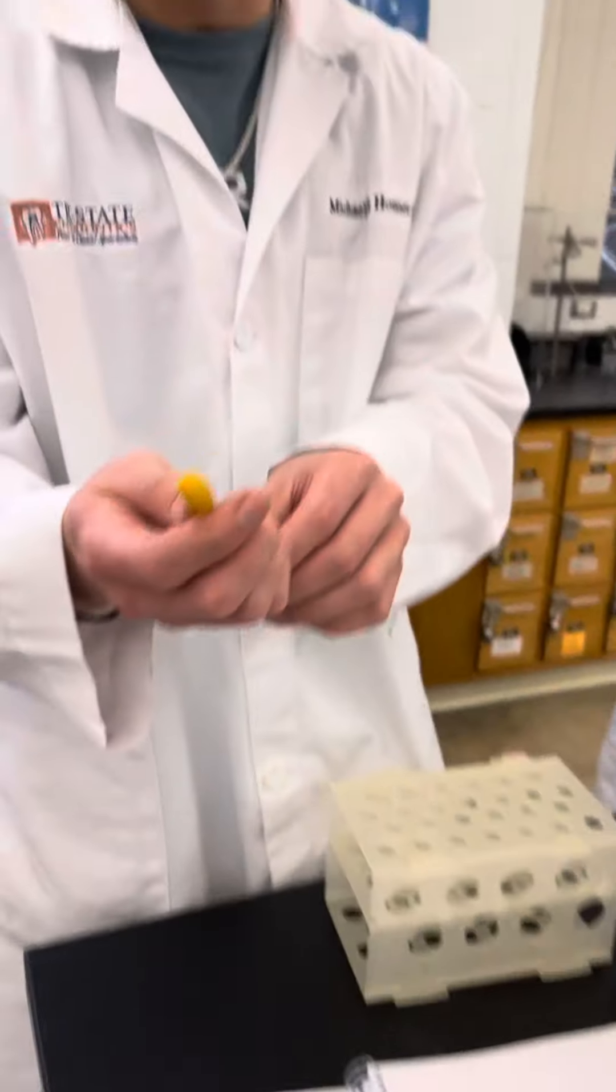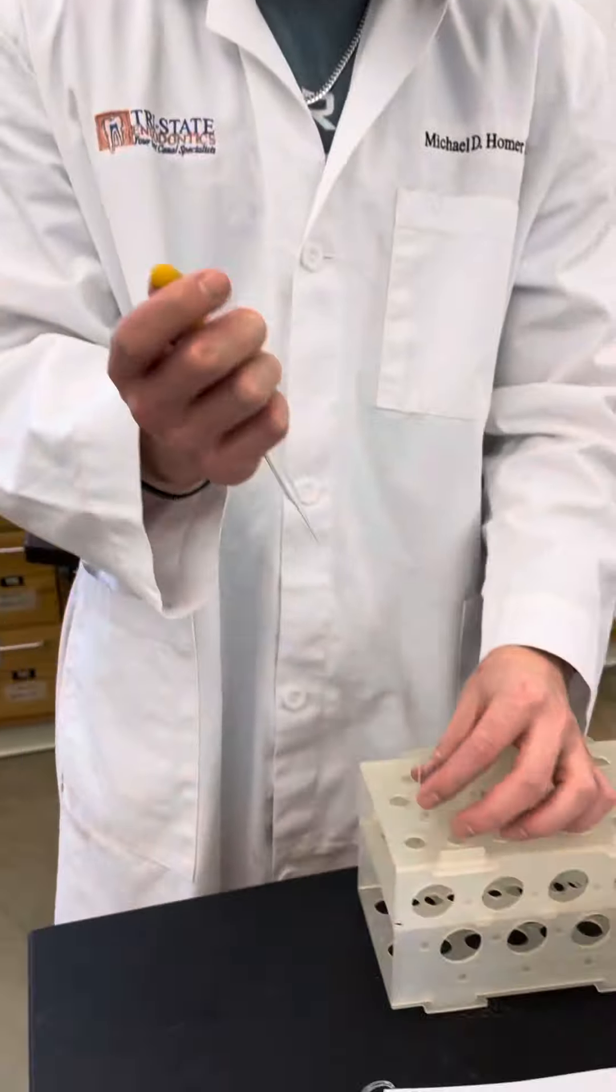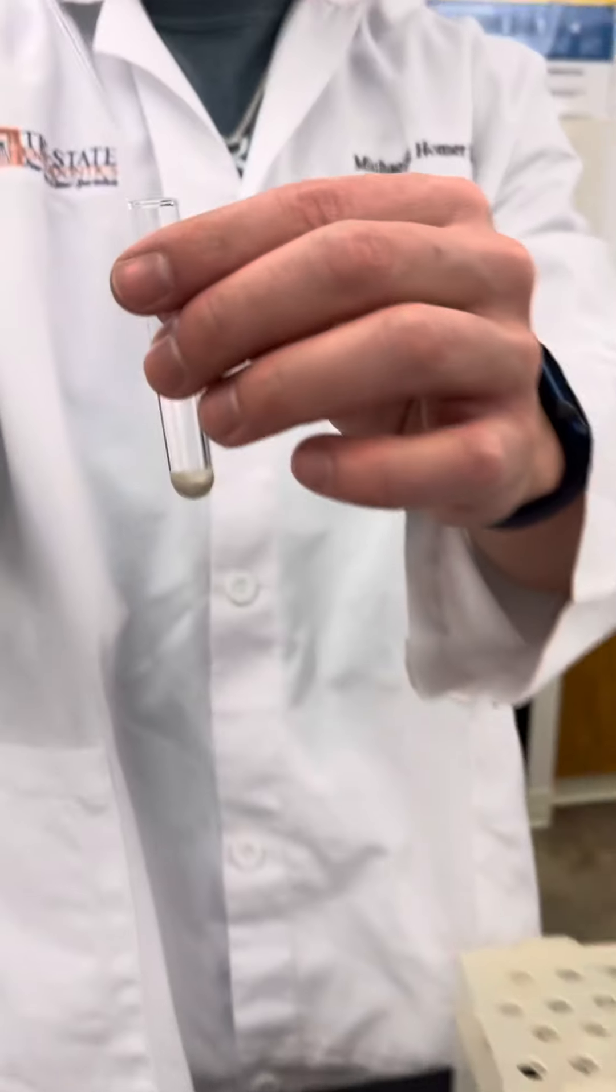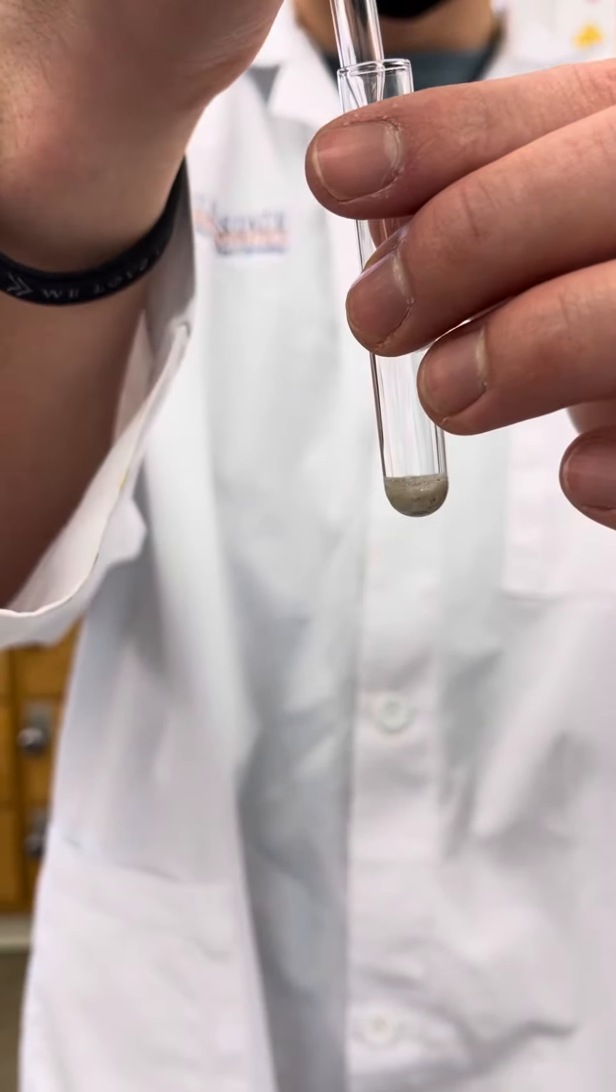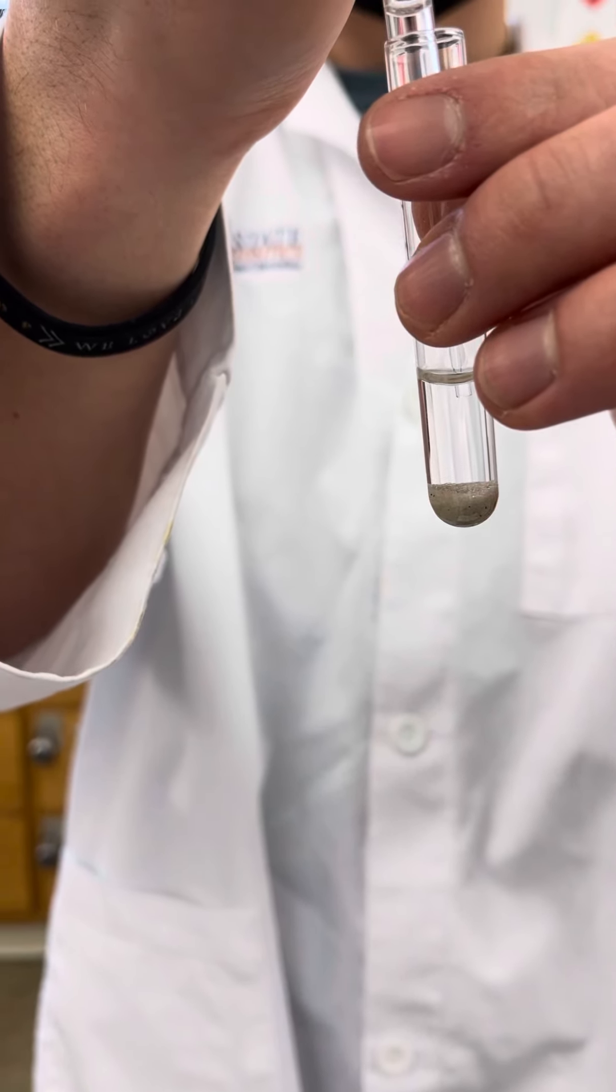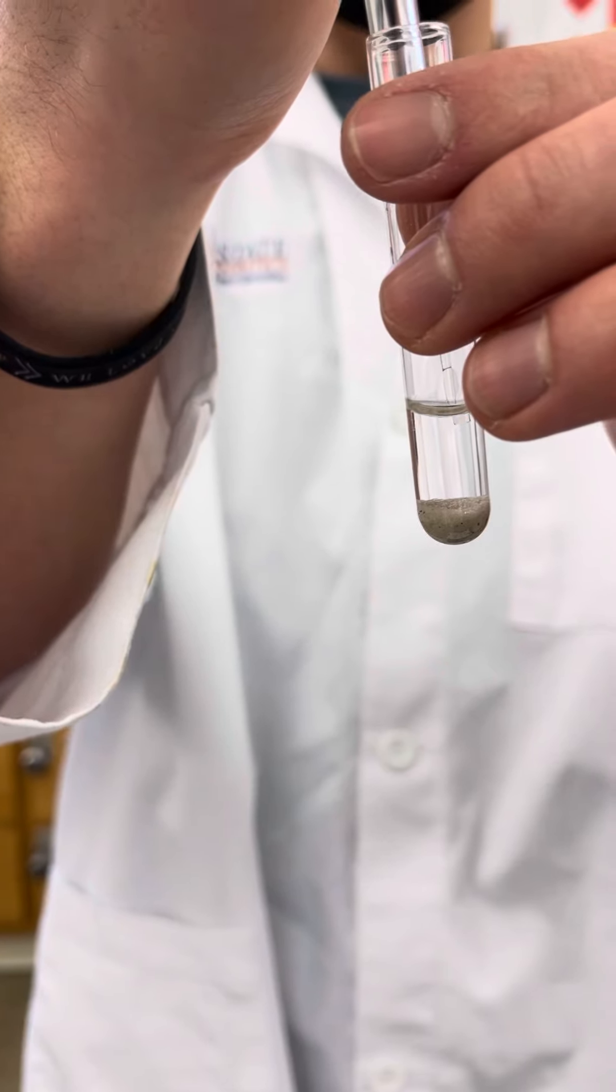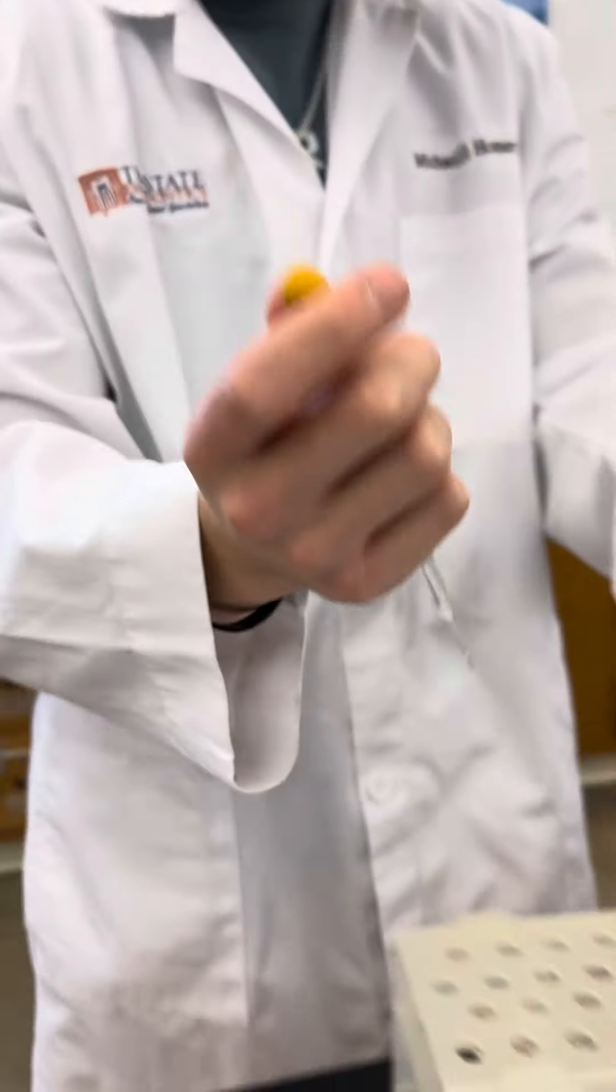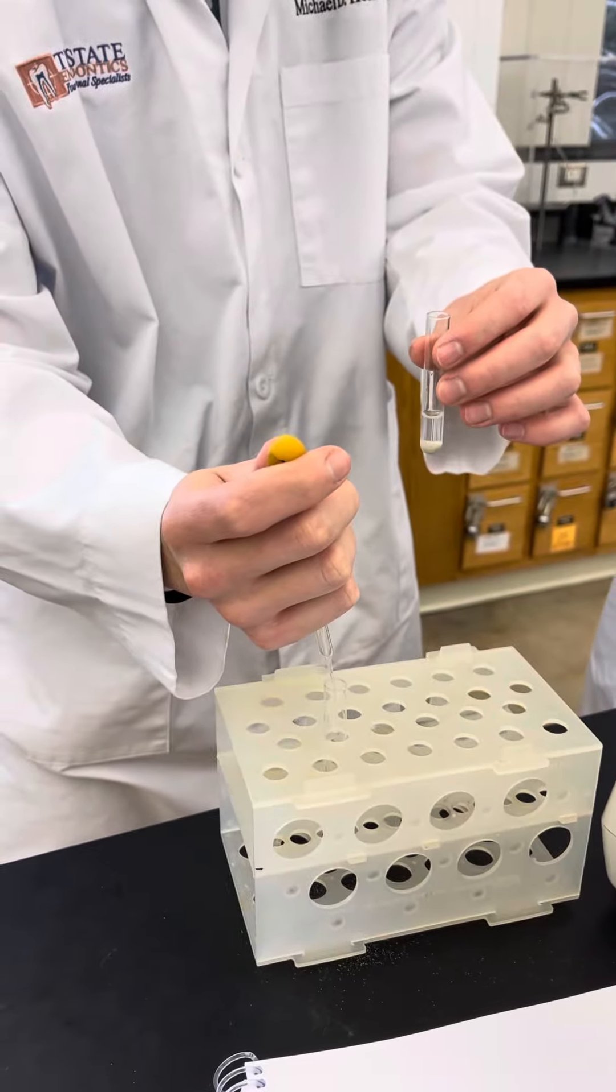And then what you're going to do to decant it, you're going to hold it properly. You're going to put it in and try to only take out the liquid above your precipitate. And you're going to put it in your waste beaker, or test tube.